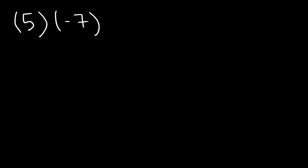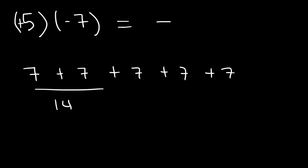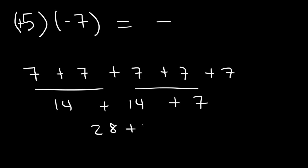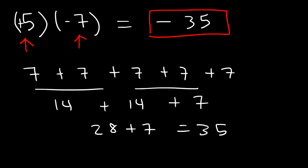Try this example: what's 5 times negative 7? We have a positive integer multiplied by a negative integer, so the final answer will be negative. We need to find what 5 times 7 is, so let's add 7 five times. 7 plus 7 is 14, 14 plus 14 is 28, and 28 plus 7 is 35. So positive 5 times negative 7 is negative 35 because the two numbers have opposite signs.